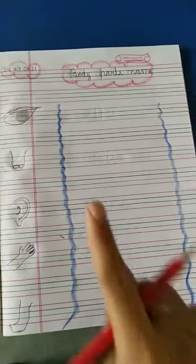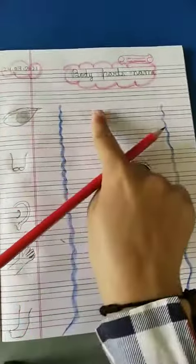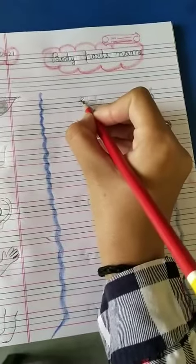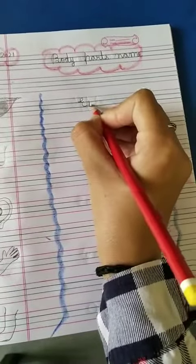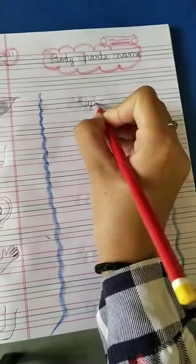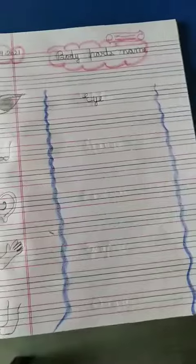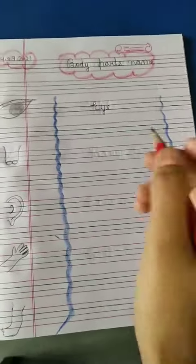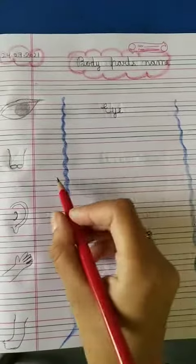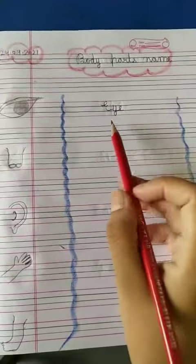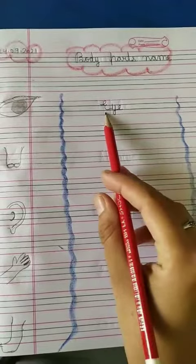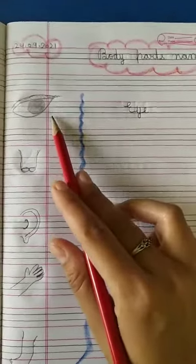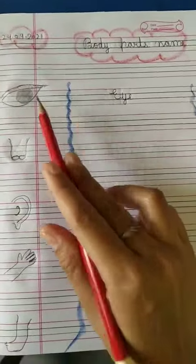Now we write: E, Y, E — eye. Write it this way: E, Y, E — eye. Then leave one line.